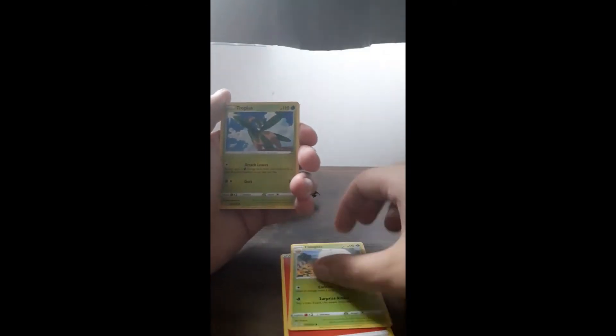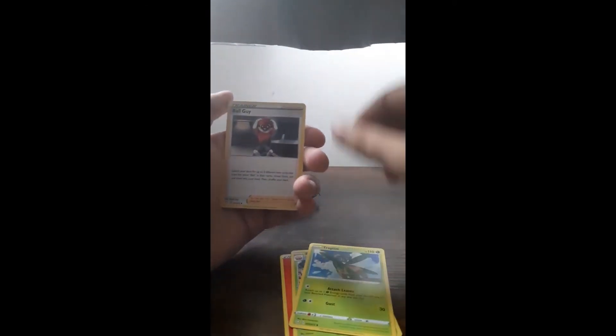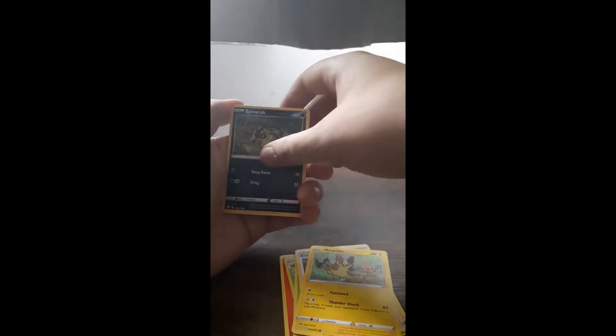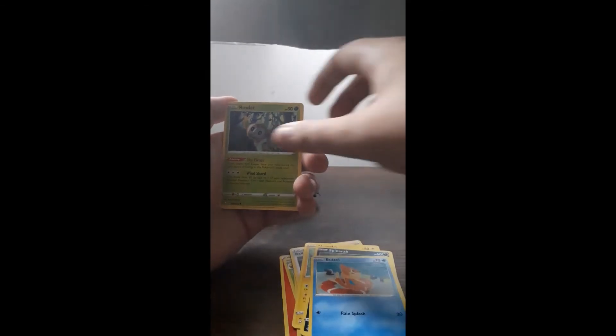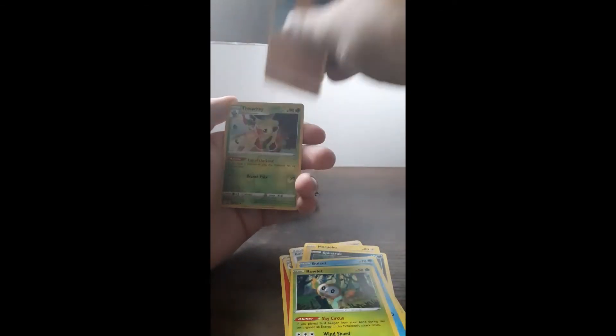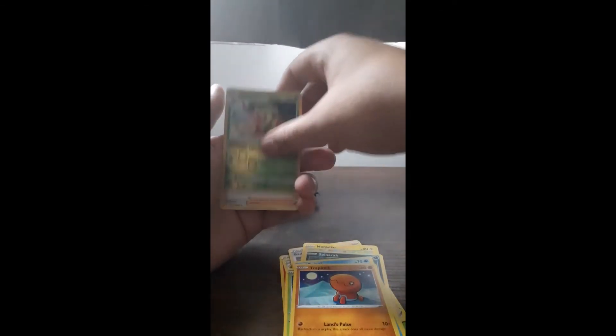I don't use them so please let me know if you get anything good. Starting off with that fire energy. Eldegoss, Tropius, Boltund, Morpeko, Spinarak, Weasel, Rowlet, Trapinch, Reverse Holo Thwacky, and Boss's Orders.